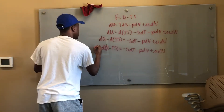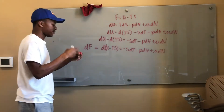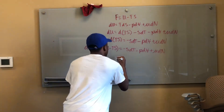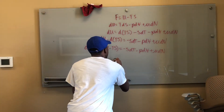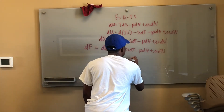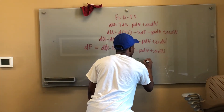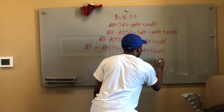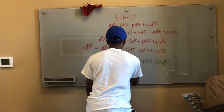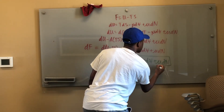And this is simply equal to my DF — D Helmholtz. That being said, I can finally come to the conclusion that the Helmholtz free energy differential is equal to negative SDT minus P DV plus mu DN. And that's my Helmholtz free energy.